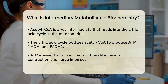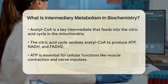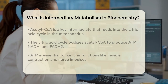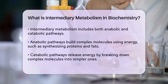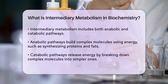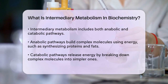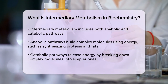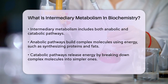Intermediary metabolism includes both anabolic and catabolic pathways. Anabolic pathways require energy and are involved in building complex molecules from simpler ones. For example, using energy from ATP, these pathways can synthesize proteins from amino acids, glycogen from glucose, and fats from fatty acids.